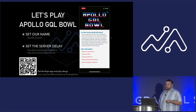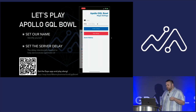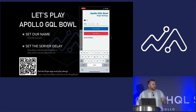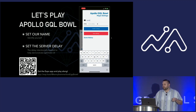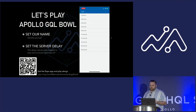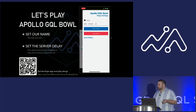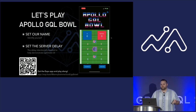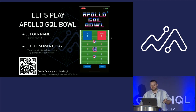What we do is set our name and then set a server delay. This delay is going to simulate a poor Wi-Fi network, dropped coverage, things like that — things you generally run into in the real world when we're not developing locally on our machines.